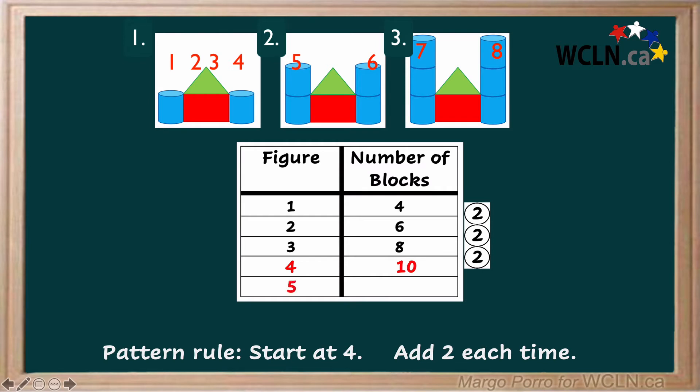For a castle with five block high towers, add two again to the number of blocks for a total of twelve blocks. Based on the pattern rule and the table, we can predict that a castle with towers that are five blocks high would need twelve blocks.